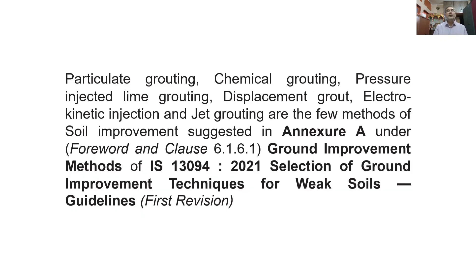Particulate grouting, chemical grouting, pressure injected lime grouting, displacement grout, electro kinetic injection, and jet grouting are a few methods of soil improvement suggested under clause 6.1.6.1 of the Indian Standard Code IS 13094:2021 — Selection of Ground Improvement Techniques for Weak Soils Guidelines, first revision. These are a few of the ground improvement methods suggested for improving the ground by grouting methods.